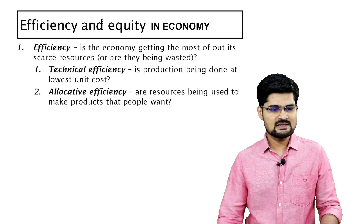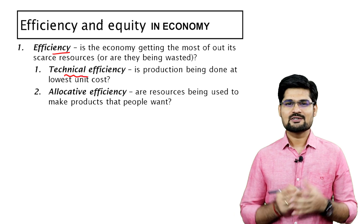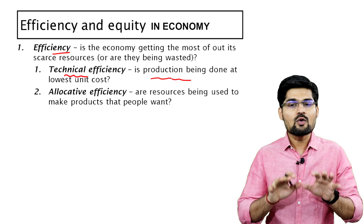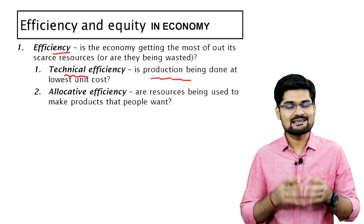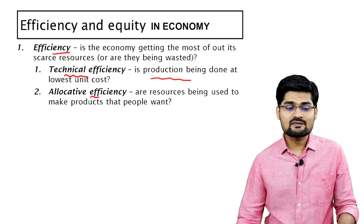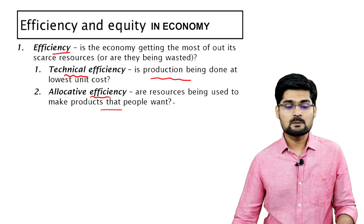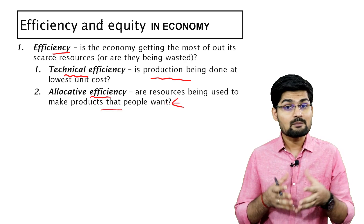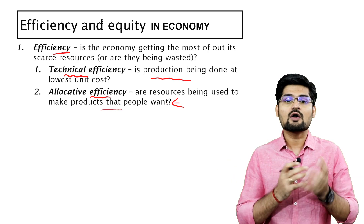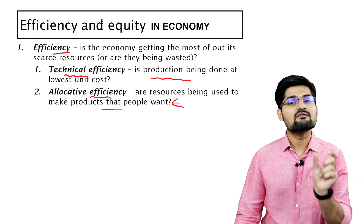The first is technical efficiency — production being done at a lower input cost. That is what technical efficiency of an economic system means. Allocative efficiency is when resources are being used to make products that people want — products that are in demand. If you're making a product which is in demand and suiting the demand of almost everyone in the system, then it is supposed to be allocatively efficient.